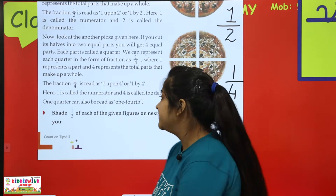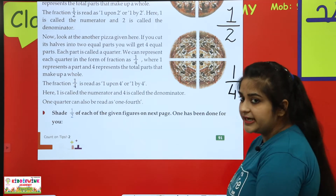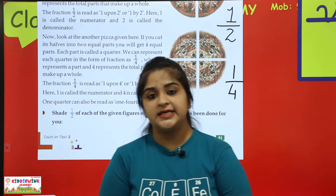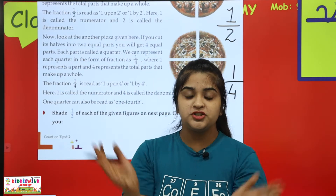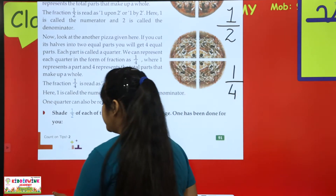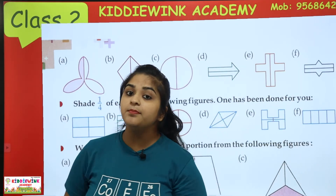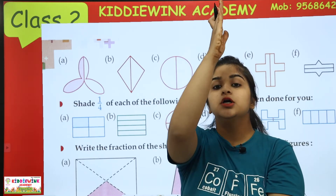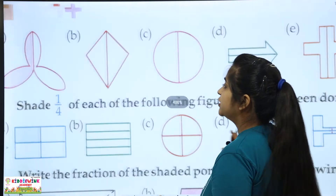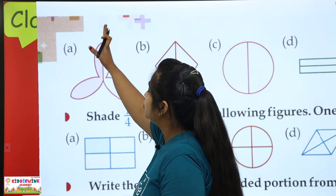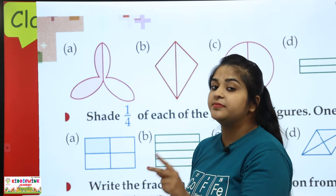Now this has been explained. The next exercise says: shade one upon two of each of the following figures. You have some pictures on the next page and you have to shade one upon two — which is the half portion, the half part of the whole picture. You can do it easily. This picture is one by two, so you have to divide it into two parts.